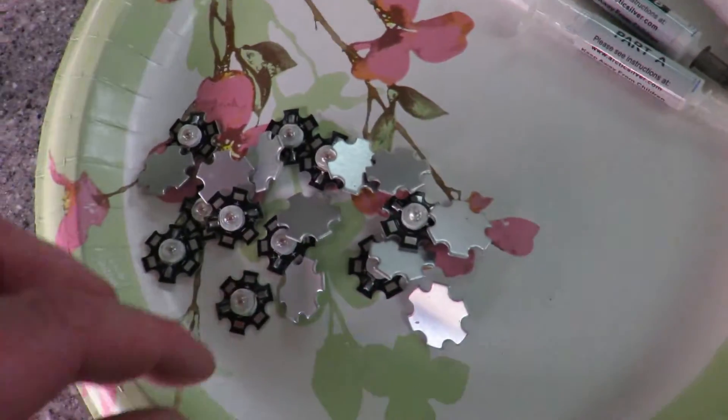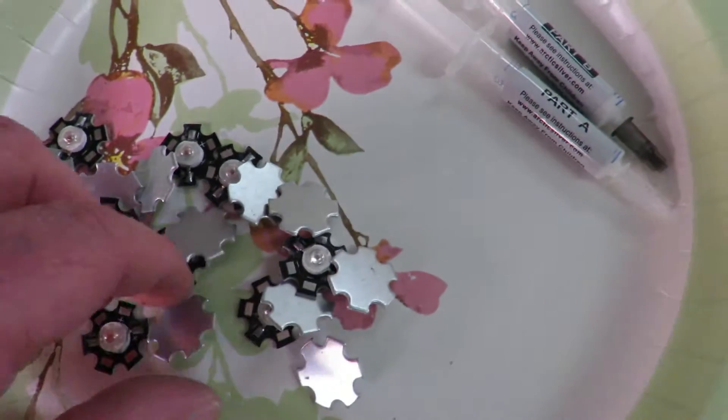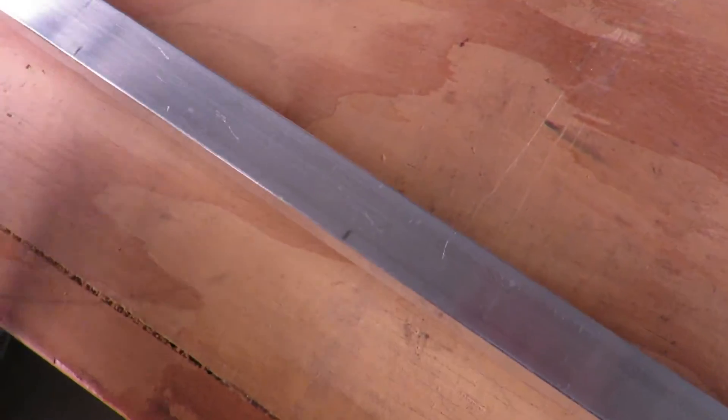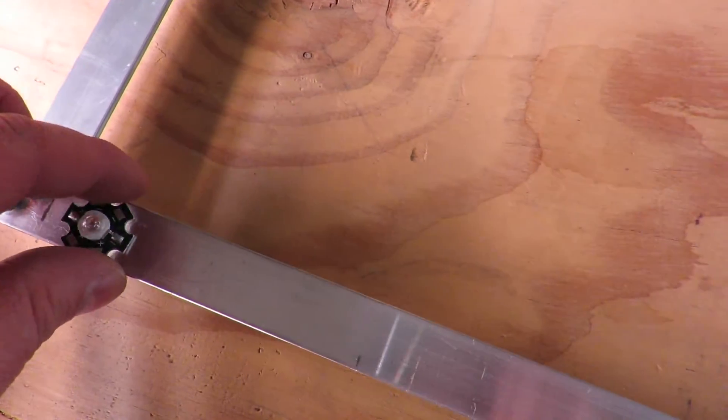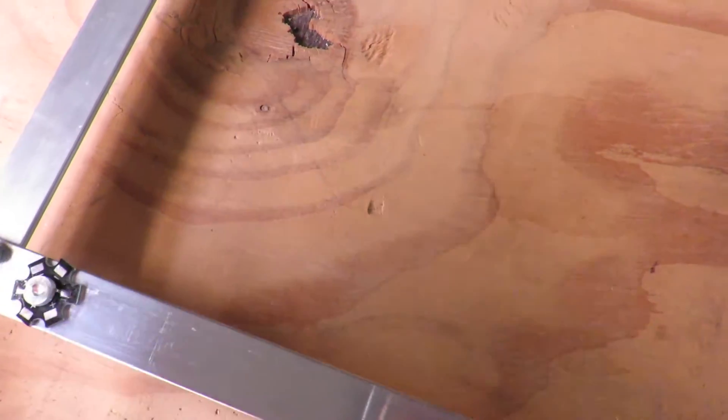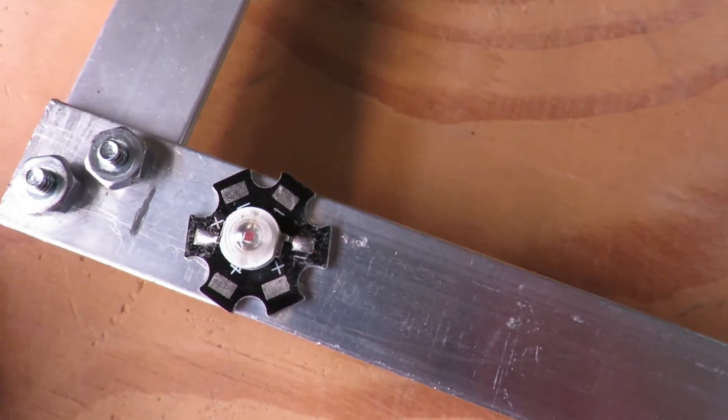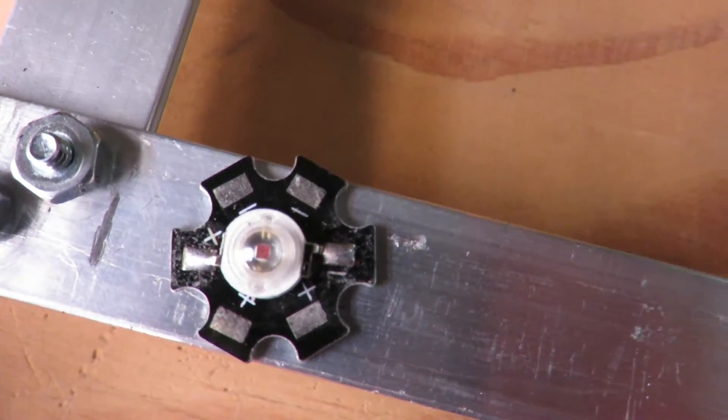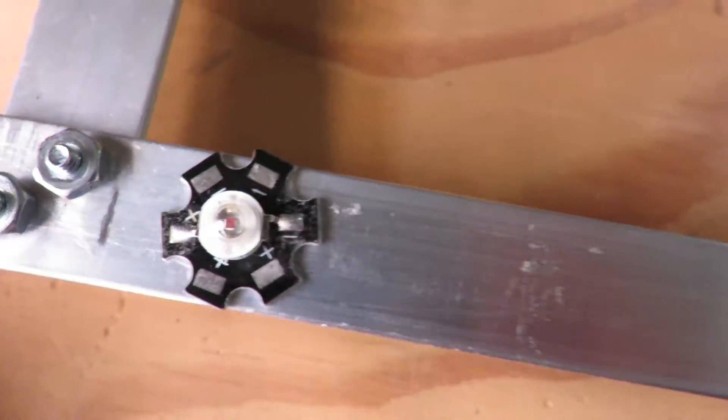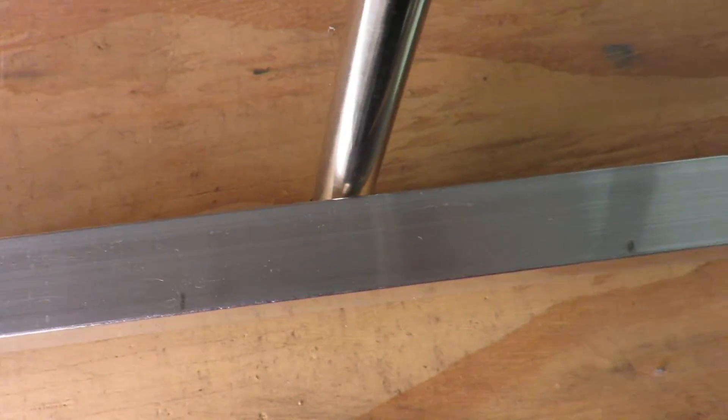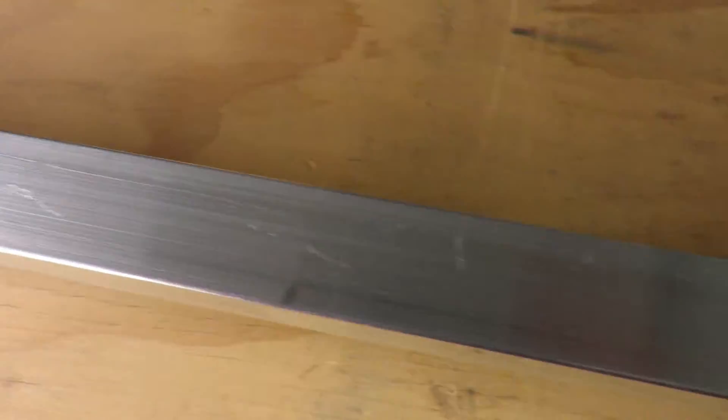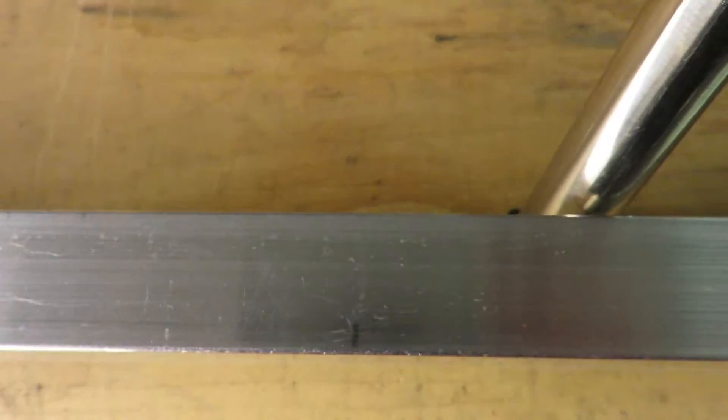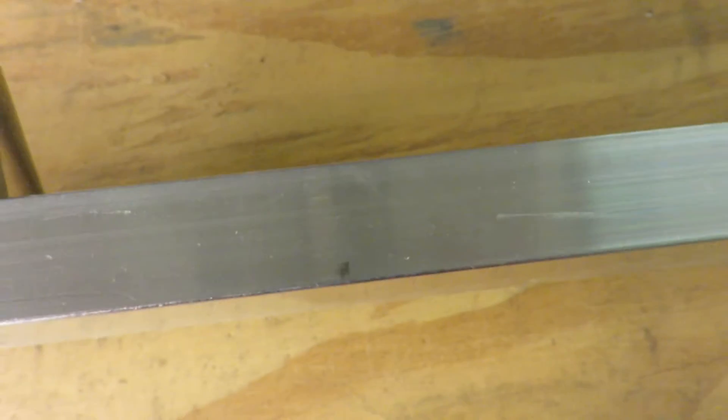The first thing we're going to do is go ahead and line out the LEDs in their places, which I've already marked on the railing. We're going to make sure we have the negative and positive in the correct place that we want them, and we're going to go all the way down the line on every mark. We're going to start with the reds and skip one and do another one, and then we're going to come back with the blues and fill in.